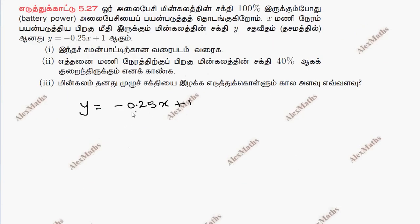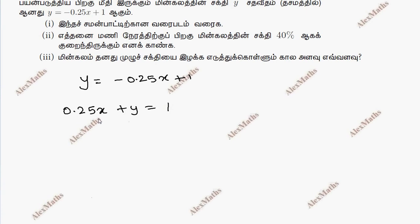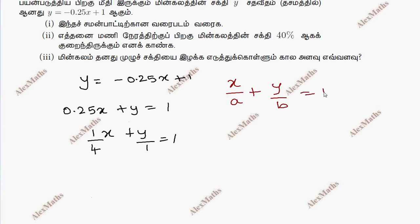This is the x term, so 0.25x plus y is equal to 1. This is x over a. So 0.25x plus y is equal to 1, and a is equal to 4 and b is equal to 1.